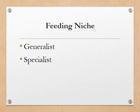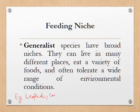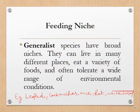On the basis of feeding habits or feeding niche, species have been classified at two levels: generalist and specialist. Generalist species have broad niches — they can live in many different places, eat a variety of foods, and often tolerate a wide range of environmental conditions. Well-known examples include leopard, cockroach, mice, rat, white-tailed deer, and raccoon.